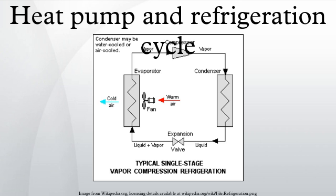The cold liquid vapor mixture then travels through the evaporator coil or tubes and is completely vaporized by cooling the warm air being blown by a fan across the evaporator coil or tubes.